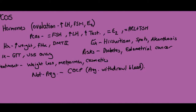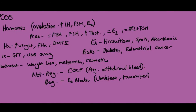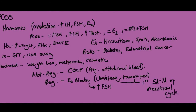Management includes weight loss to increase sex hormone binding globulin, metformin for glucose control, and cosmetics to help cover acne. If the woman doesn't want to become pregnant, the combined oral contraceptive pill is used to allow a progesterone withdrawal bleed after three weeks, helping maintain regular periods. If she does want to become pregnant, FSH should be given in the first five to seven days of the cycle, which can be achieved using an oestrogen blocker such as clomiphene or tamoxifen.